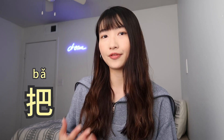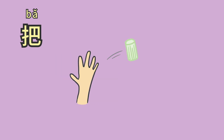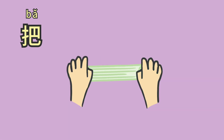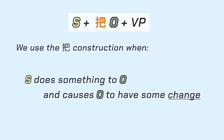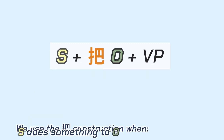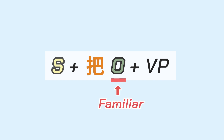把 was commonly used as a verb meaning 'to hold,' and now it's a function word. You can imagine that 把 originally means to hold, and when you hold something, you have control over it and can do something to it. So we use the 把 construction to indicate what the subject does to the object, which causes the object to have some change. Also in the 把 construction, because the new information is about the object of the sentence, the object is something we want to talk about — so it will be something already familiar to both parties and important in the conversation.